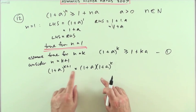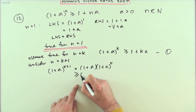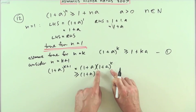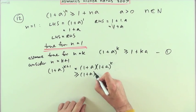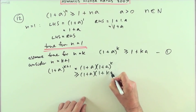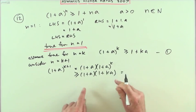So I can say, well if this is equal to that, then it's going to be greater than or equal to (1+a) times—replacing this part because this part is greater than or equal to this—1+ka. Now I can't write greater than or equal to again because I want to play around with this expression.